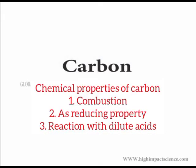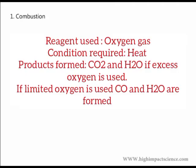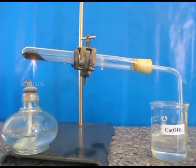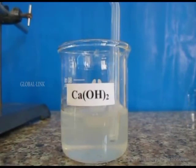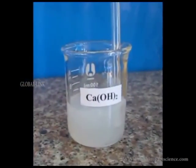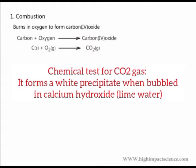Chemical properties of carbon — Combustion. When carbon is heated, it glows red. A colorless gas is produced which reacts with calcium hydroxide to form a white precipitate. The red glow shows that the reaction produces heat. The white precipitate shows that the gas produced is carbon dioxide. All forms of carbon burn in oxygen to produce carbon dioxide. However, the temperature at which they burn varies from one allotrope to another.